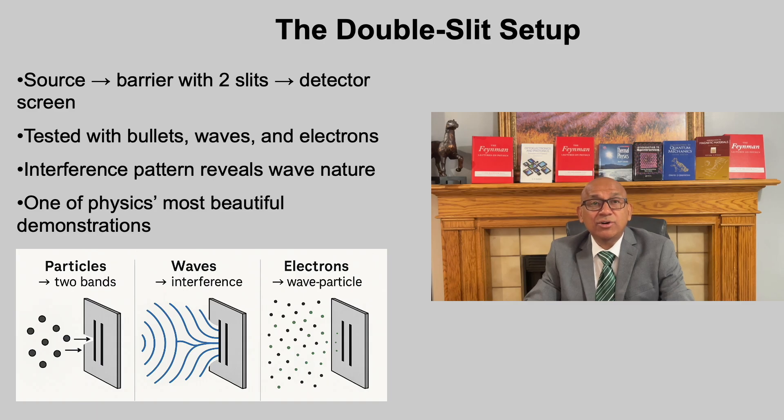Finally, replace the bullets or waves with electrons, actual particles of matter. Surprisingly, even when electrons are sent one at a time, the pattern that emerges is not two simple bands, but an interference pattern just like waves. This experiment is often called physics' most beautiful demonstration because it vividly shows that matter, like light, can behave both as particles and as waves.